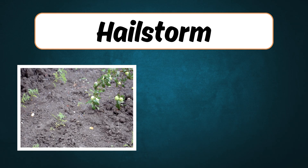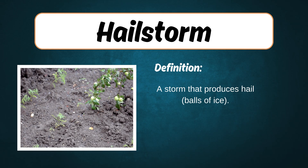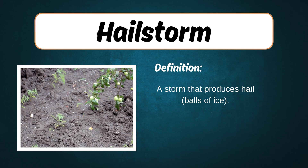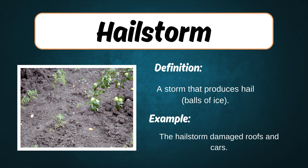Hailstorm. Definition: A storm that produces hail — balls of ice. Example: The hailstorm damaged roofs and cars.